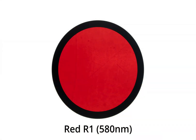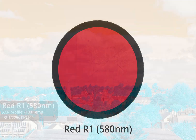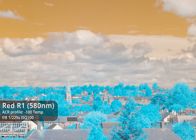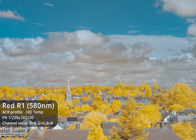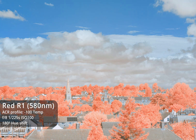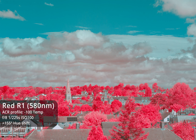The red filter tested is the Pig Iron Red R1, which should be pretty much the same as other red or 25A filters — it passes light with a wavelength longer than 580nm. The red 25A filter is traditionally used with a red-blue channel swap to give yellow foliage and a blue sky, which is why it's sometimes referred to as the Goldie filter. Applying a 180-degree hue shift instead gives orange foliage and a blue sky, while a 155-degree hue shift gives more of an aerochrome or IR chrome effect with red foliage.